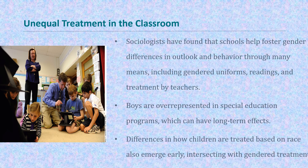Unequal treatment in the classroom: sociologists have found that schools help foster gender differences. Teachers tend to call on male students for science and math, and on female students for the arts and language. Children are treated differently based on gender in the classroom and this has long-term effects. Differences in how children are treated are also based on race, which also emerges early and intersects with gendered treatment.